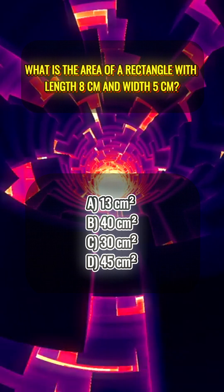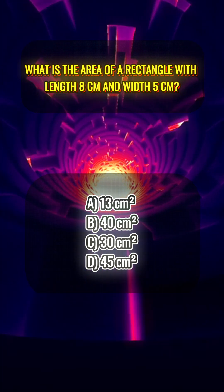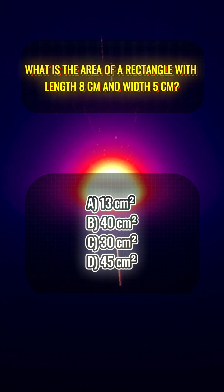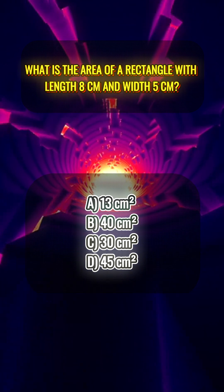What is the area of a rectangle with length 8 centimeters and width 5 centimeters? A, 13 square centimeters. B, 40 square centimeters. C, 30 square centimeters. D, 45 square centimeters.